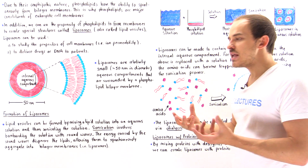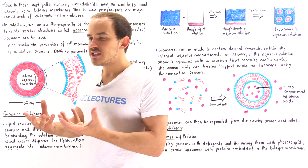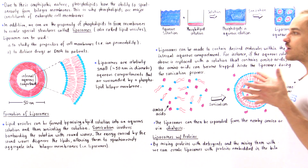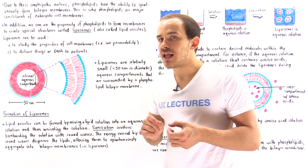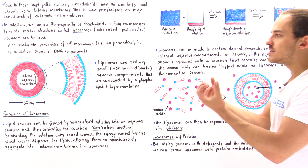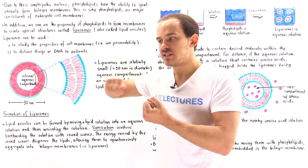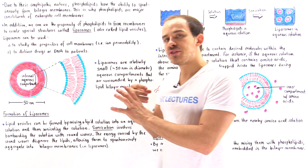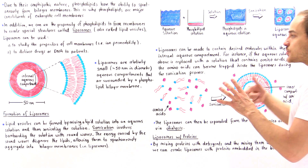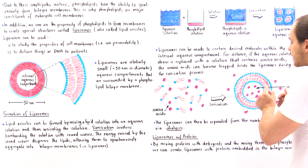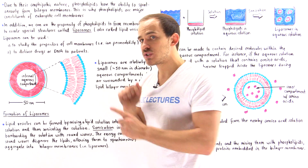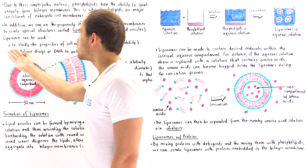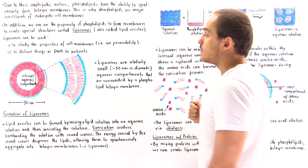We can also use liposomes to deliver drugs to patients. For instance, if a patient has a tumor — a collection of cancerous cells — we can build liposomes and direct them to those cancerous cells. Because the tumor cells also contain a phospholipid bilayer membrane, the liposomes can fuse with those cell membranes and inject whatever drug is inside the internal aqueous compartment into the cancerous cells, killing them off.